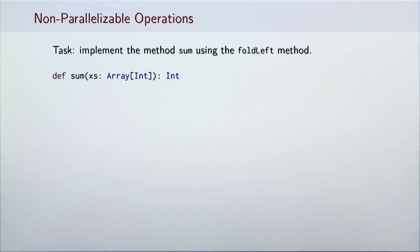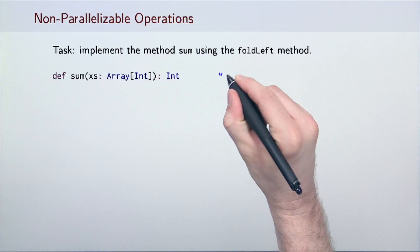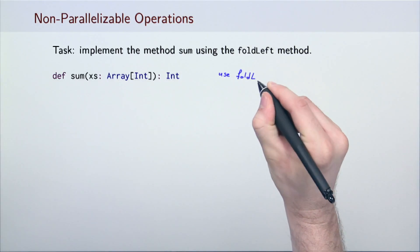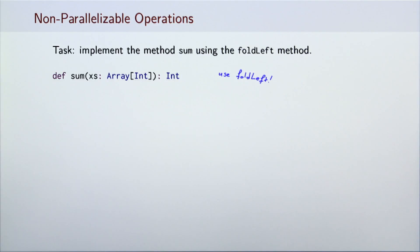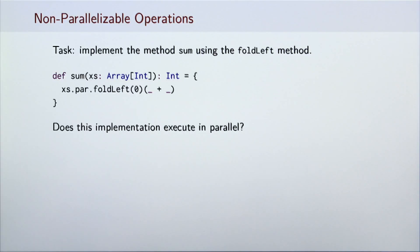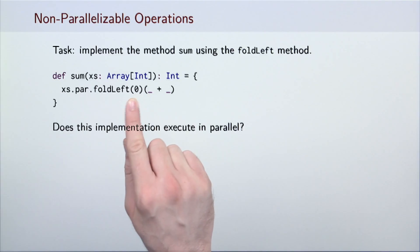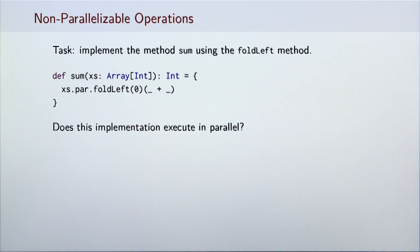Here is a task for you: implement a parallel sum method which returns the sum of the integers in the given array. In your implementation, you should use the method foldLeft. The implementation calls dot par to create a parallel version of the array and then invokes the foldLeft method with the initial value of the sum equal to 0.